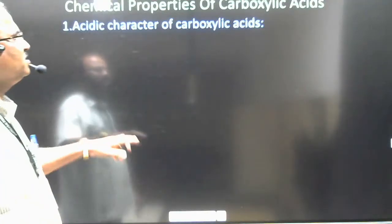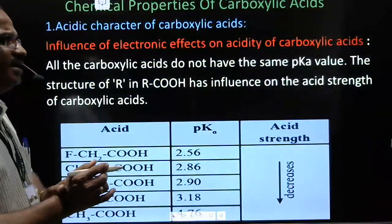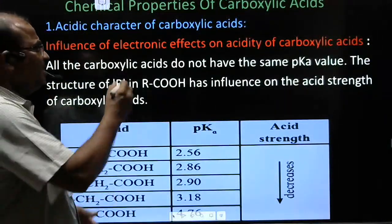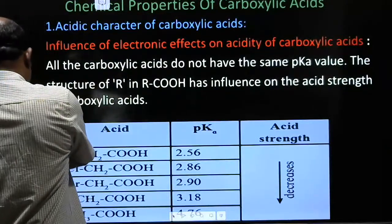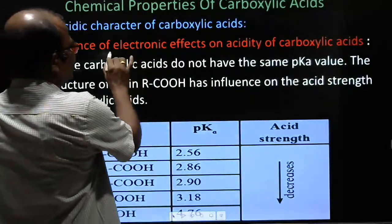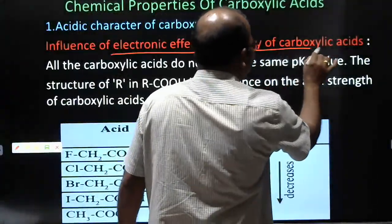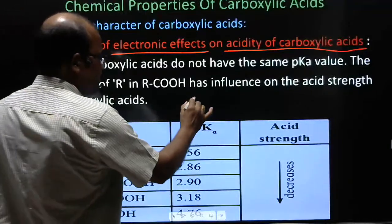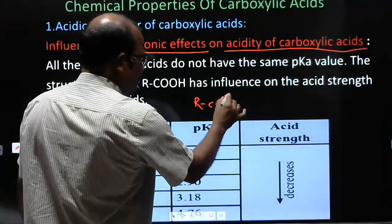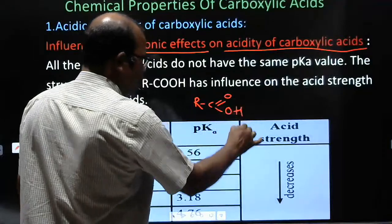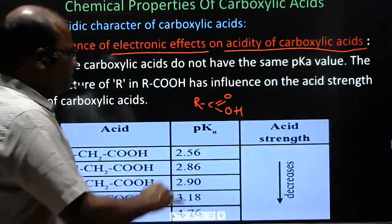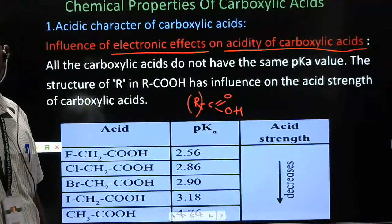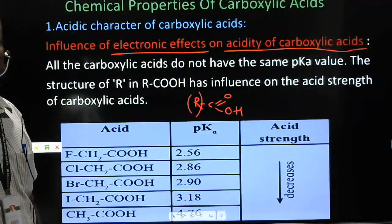The next part of acidic character of carboxylic acid covers the influence of electronic effect on acidity. In R COOH, on the R group you can attach electron withdrawing groups as well as electron donating groups, and these will have a significant influence on the acidity of the acid.